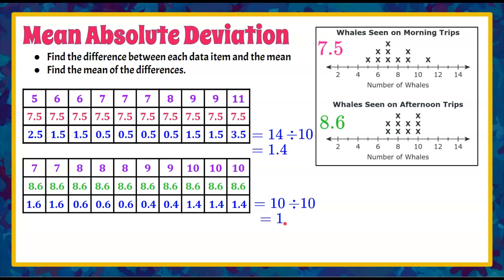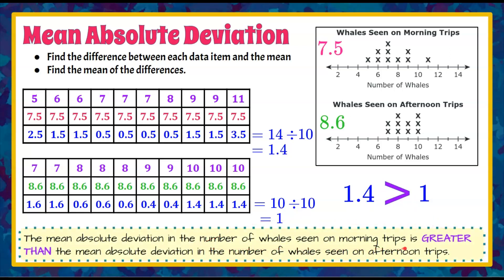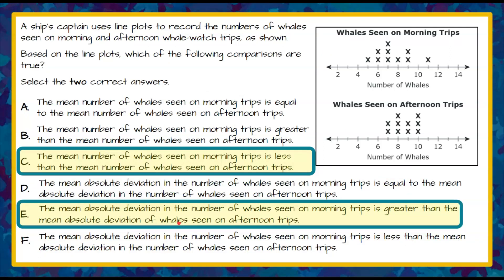A MAD of 1 is less than 1.4, meaning the afternoon data was less variable. If we look at the line plot, the afternoon data is less spread out — it deviated from the average more in the morning than in the afternoon. So 1.4 is greater than 1, meaning the mean absolute deviation in the morning was greater than the mean absolute deviation for afternoon trips. We select answer choice E. Our two correct answers are C and E.